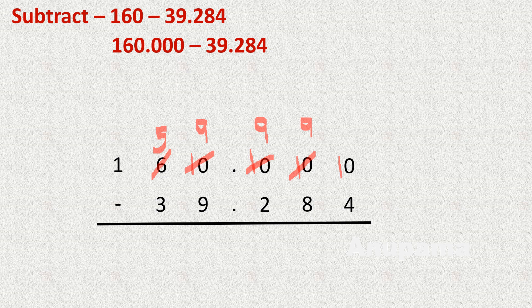Now we can subtract. 10 minus 4 is 6. 9 minus 8 is 1. 9 minus 2 is 7. We place the decimal point. Then 9 minus 9 is 0.